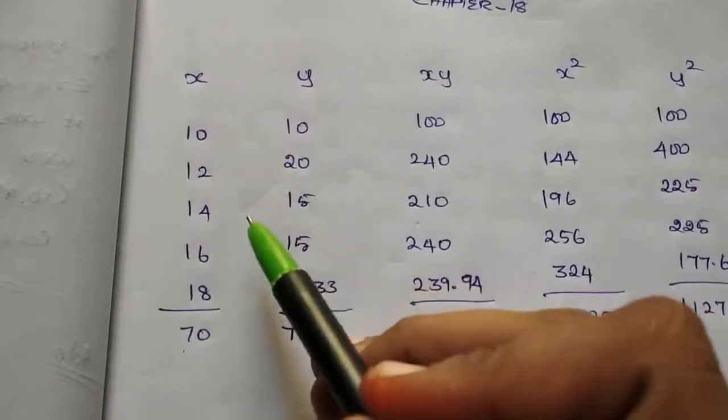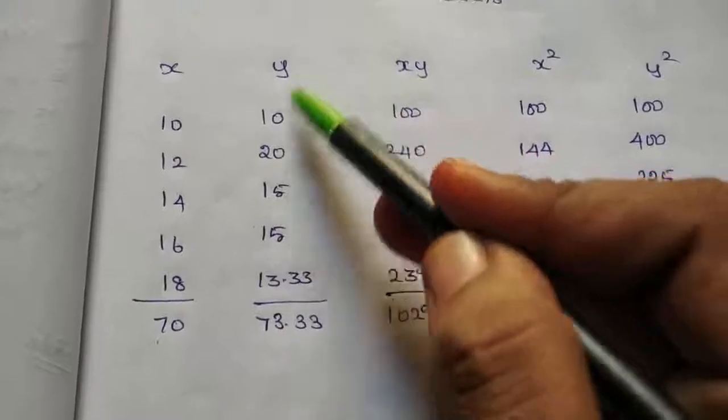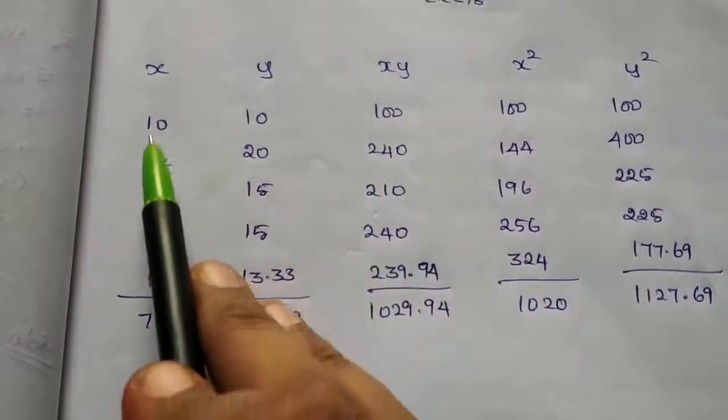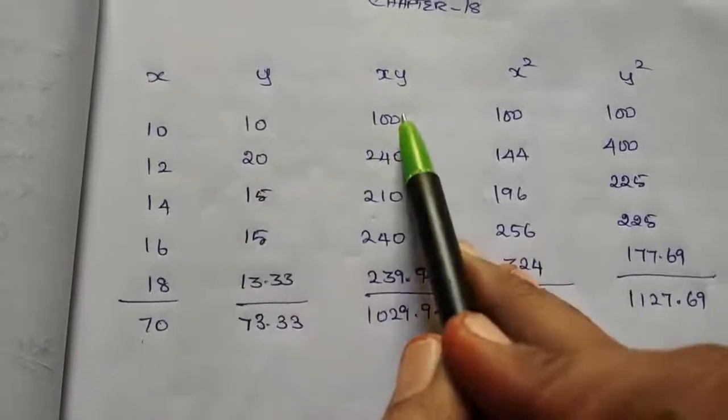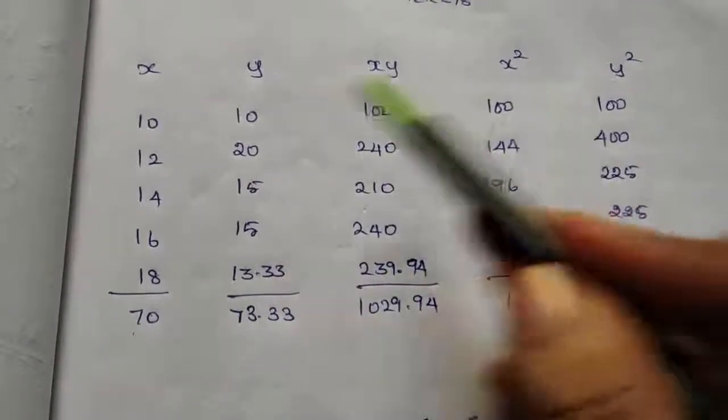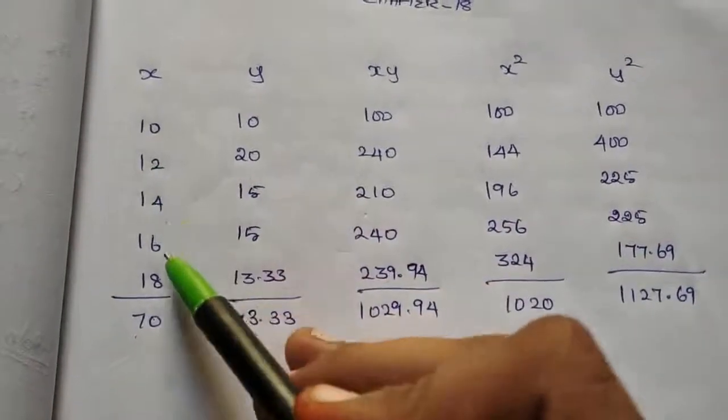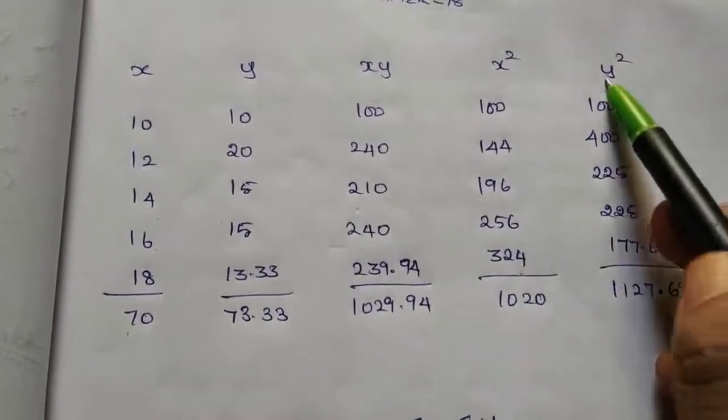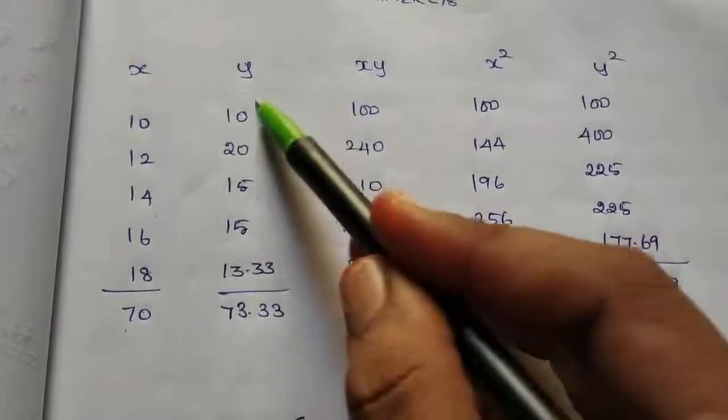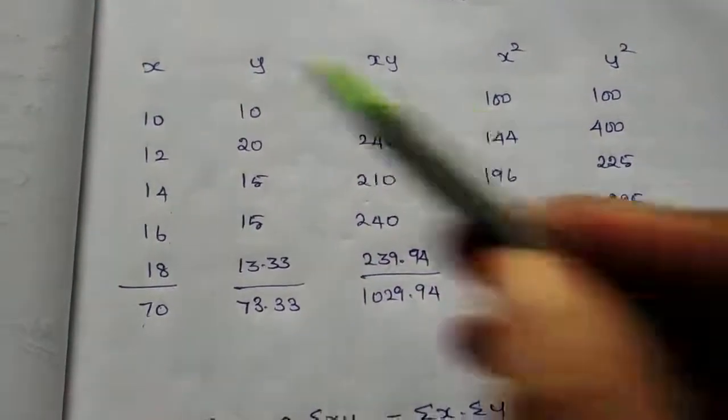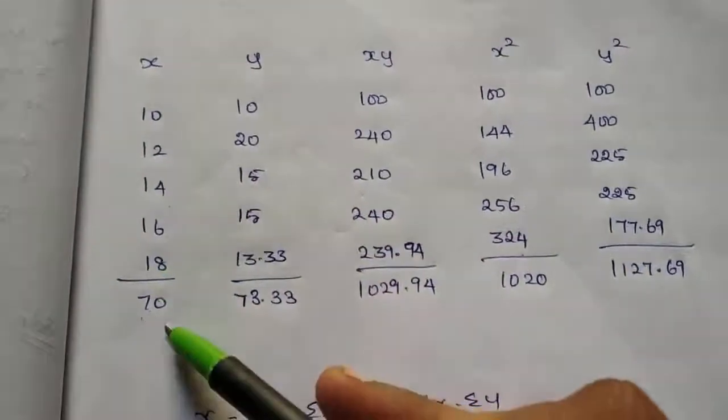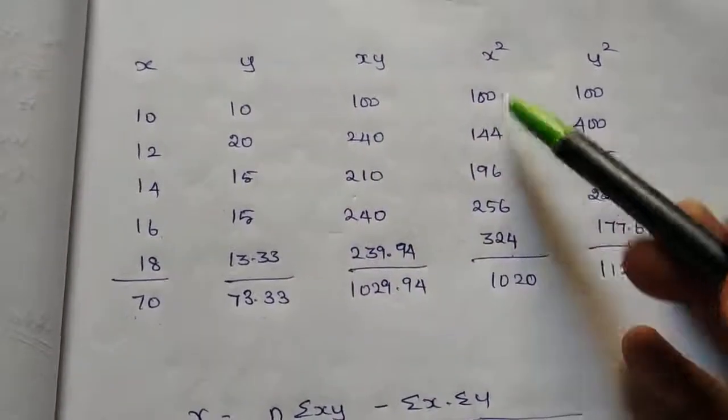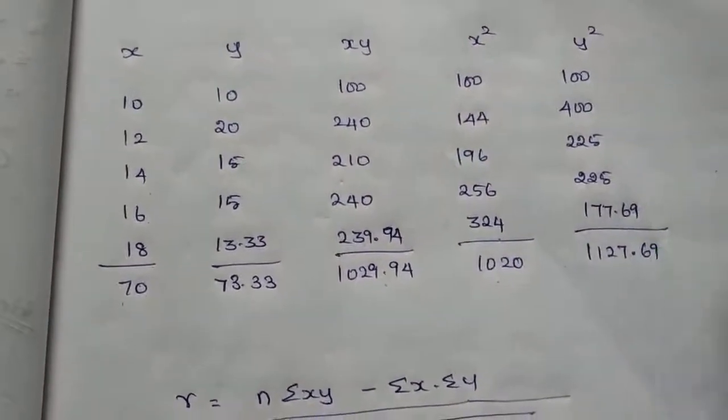Now correlation coefficient value: Y value will substitute. XY will multiply. X square: 10 square, 12 square, 14 square, 16 square, and 18 square. Y square value without square value. Summation Y value, summation XY value, summation X square, and summation Y square value.